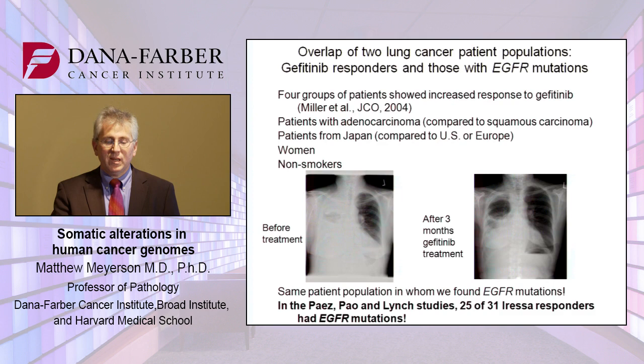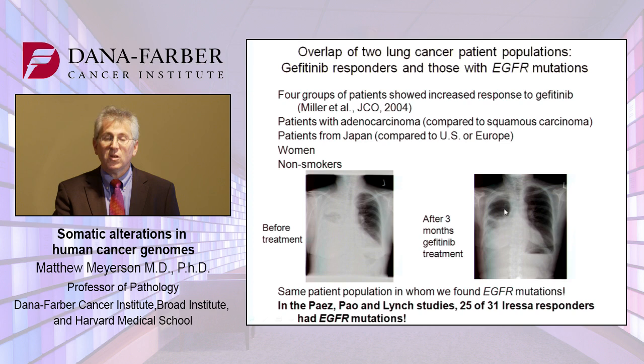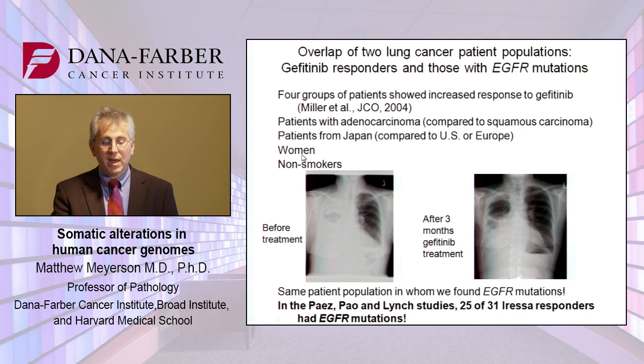Strikingly, there was a very strong overlap of two lung cancer patient populations — those who showed the increased response to gefitinib: patients with adenocarcinoma compared to squamous carcinoma, patients from Japan or all of East Asia compared to patients of European and African descent, women compared to men, nonsmokers compared to smokers. These are the patient populations who respond the best to gefitinib or erlotinib, and they are the patients who have the most EGFR mutations. I don't think we understand the mechanisms that cause this increased fraction of EGFR mutations.